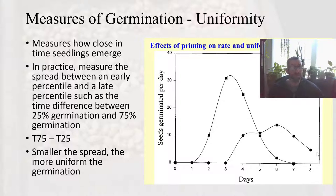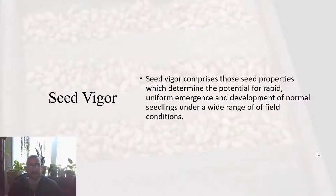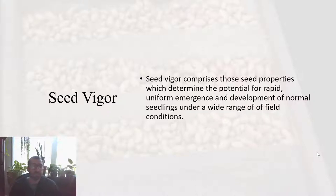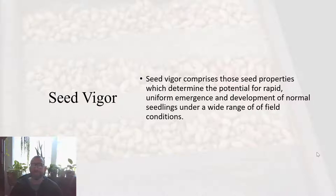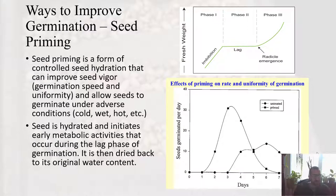These three measures — percentage, speed, and uniformity — can be used together to assess how well your seeds are germinating from different standpoints. This leads us to the idea of seed vigor, which is the properties of a seed that determine the potential for uniform emergence and the development of normal seedlings under a wide range of field conditions. We measure that germination looking at percentage, speed, and uniformity.